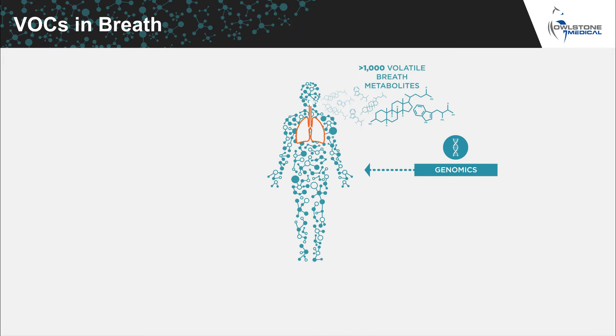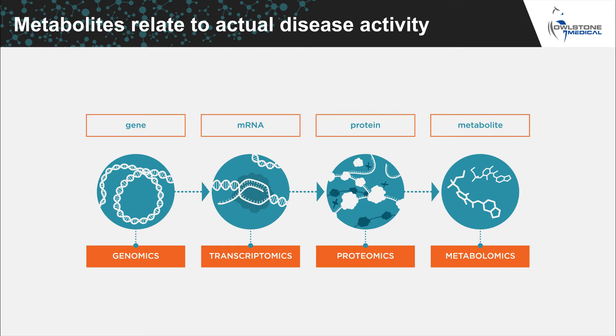So which VOCs are present in breath, and where do they come from? The thousands of volatile organic compounds in exhaled breath are fundamentally metabolites produced by the body. Endogenous metabolites are the end product of gene transcription and protein expression. What makes metabolites very interesting as potential biomarkers is that while our genome can tell us about the risk of getting a disease, it's our downstream metabolism that gives us the best real-time snapshot of what's actually happening now. The identity and concentration of metabolites provides relevant information about actual disease activity, because they most closely resemble the phenotype of an individual.